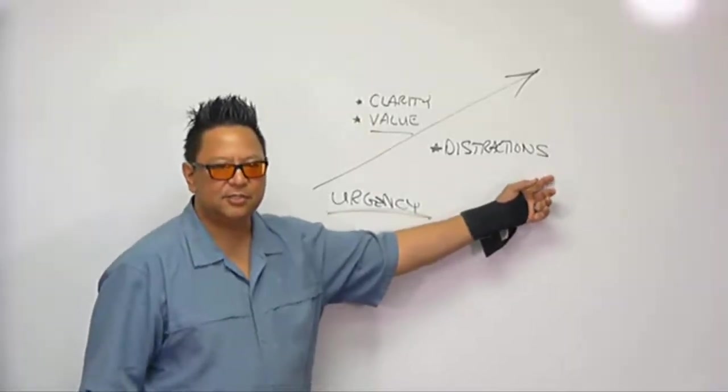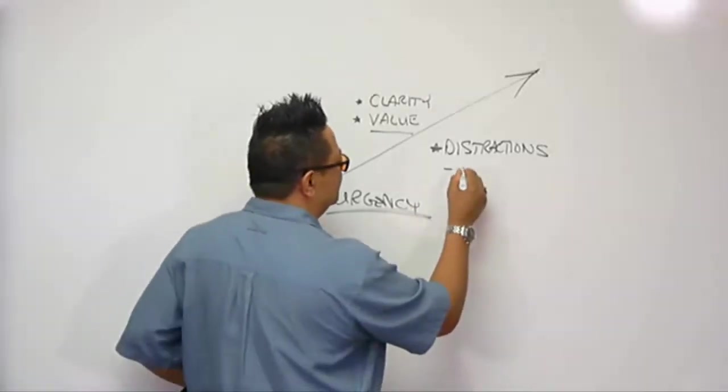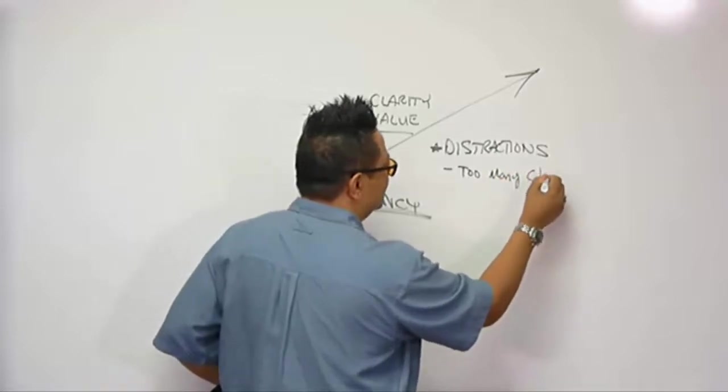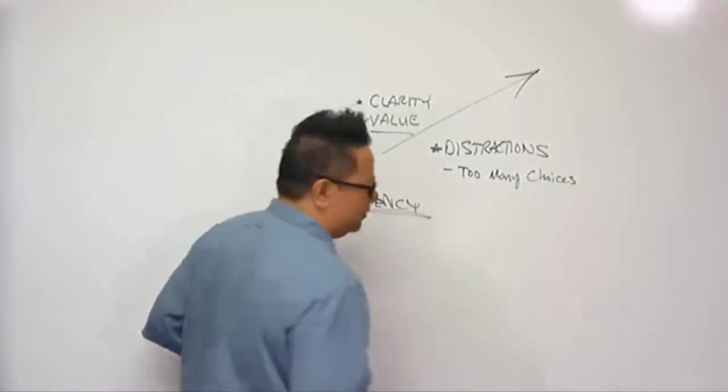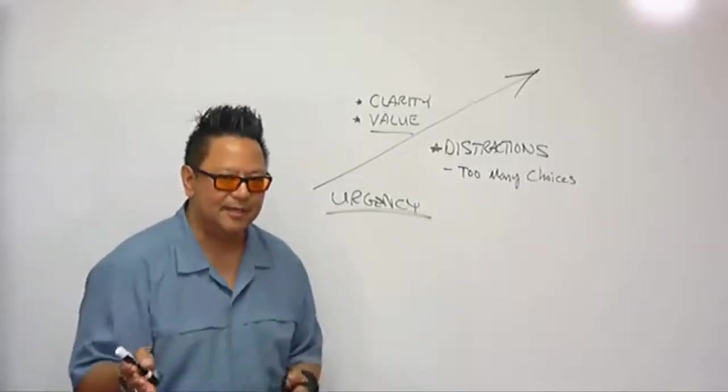All of a sudden, all these distractions were clouding her judgment as far as what she needed to accomplish to take care of her loved ones, right? So she lost clarity because of distractions. She reduced distractions. And distractions can come in the form of too many choices, right?